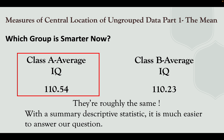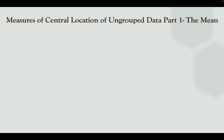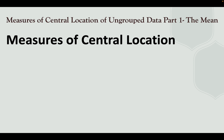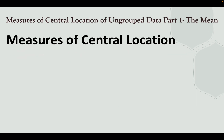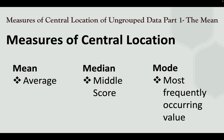With a summary of descriptive statistics, it is much easier to answer our questions. The commonly used descriptive analysis is measures of central location, which represents the values where the data observations tend to concentrate or cluster. These measures help us represent the entire mass of the given data by a single value. We have the mean (the average), the median (the middle score), and the mode (the most frequent or occurring value).